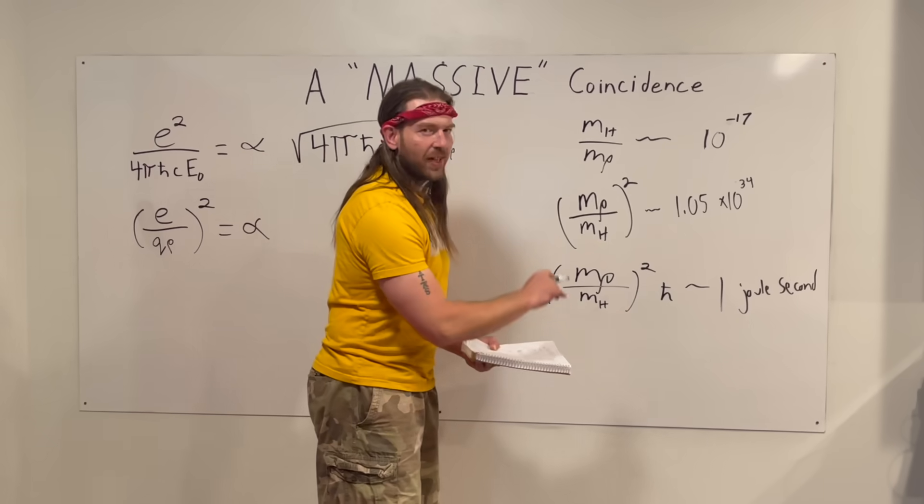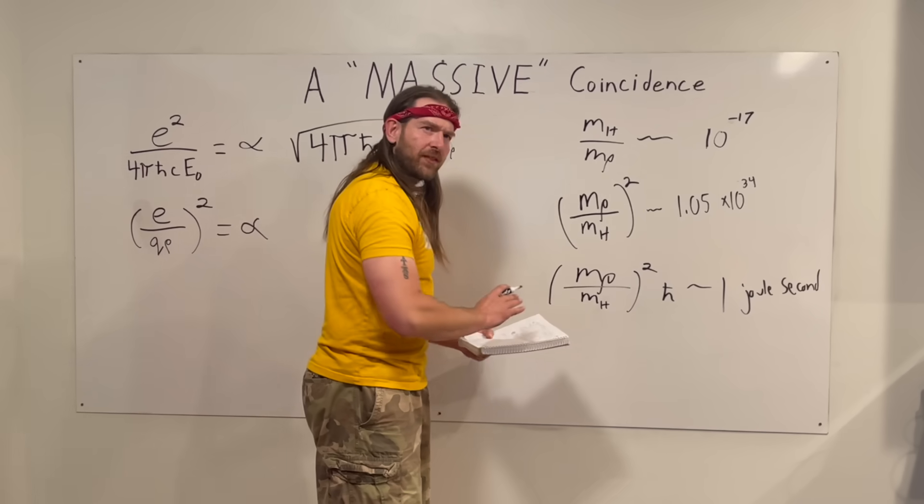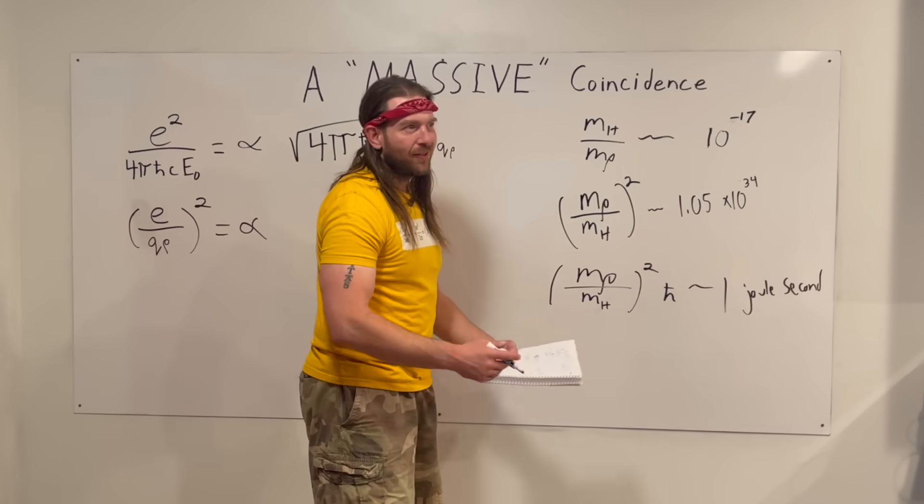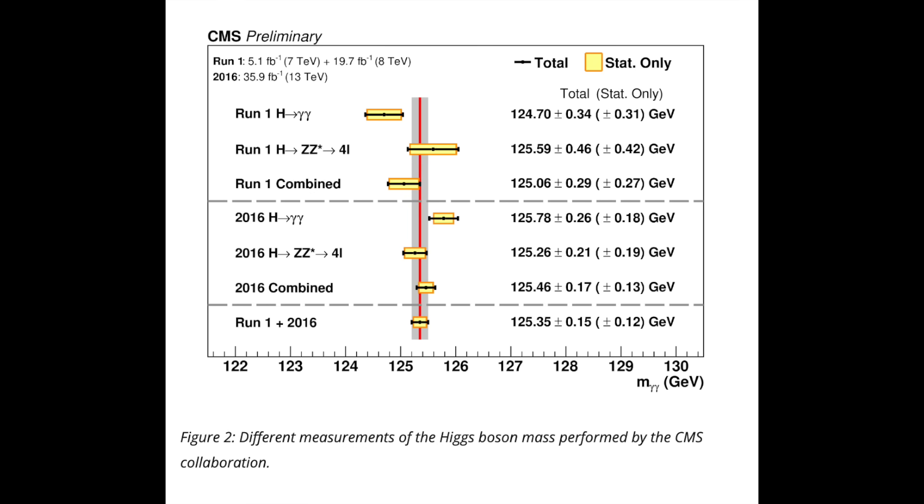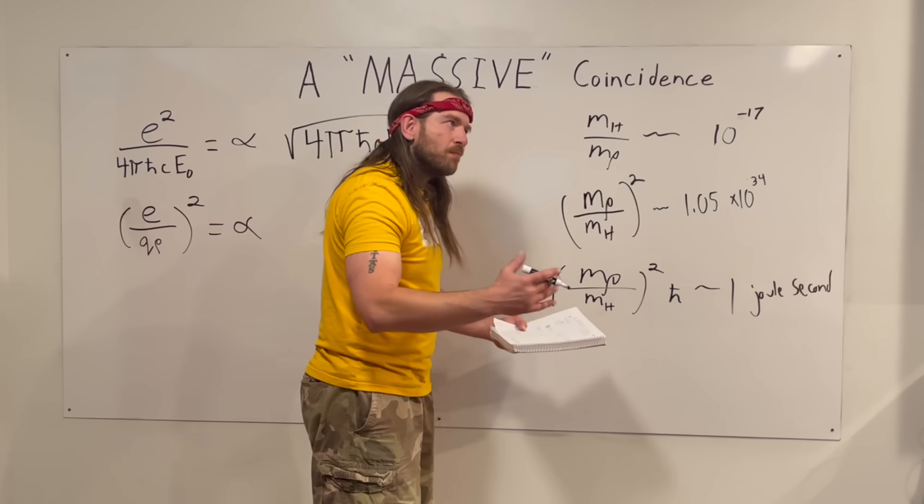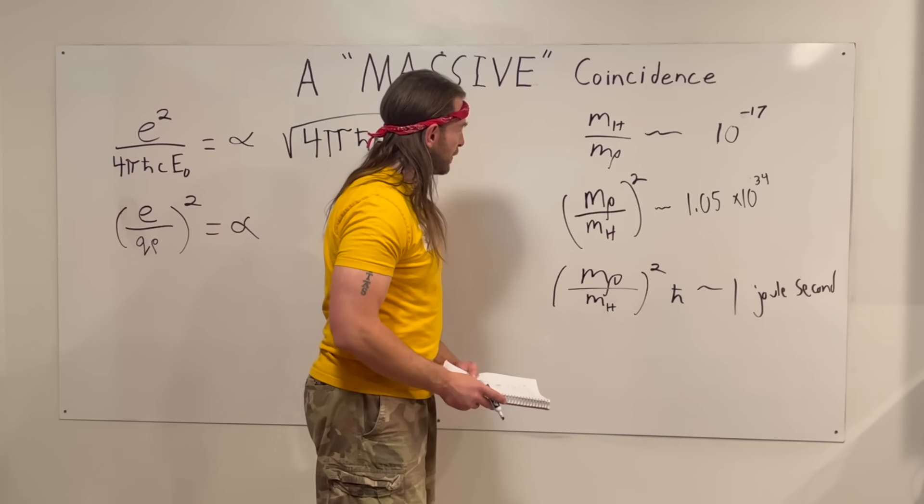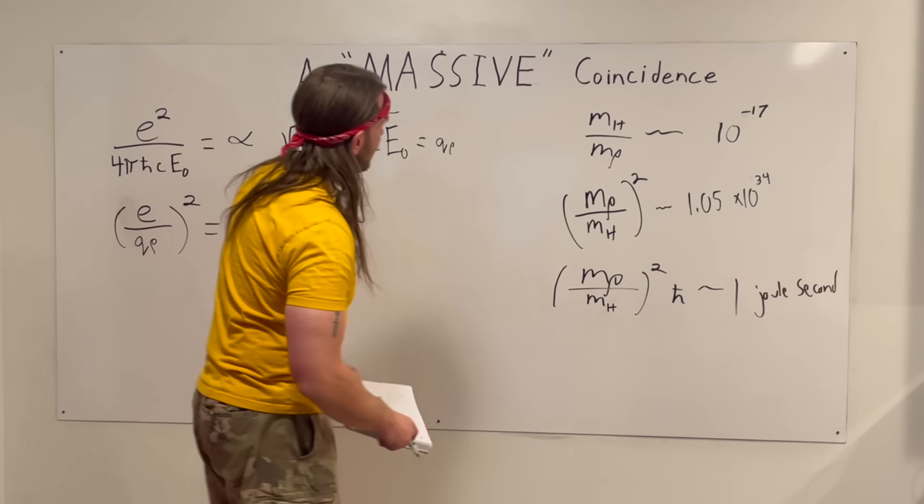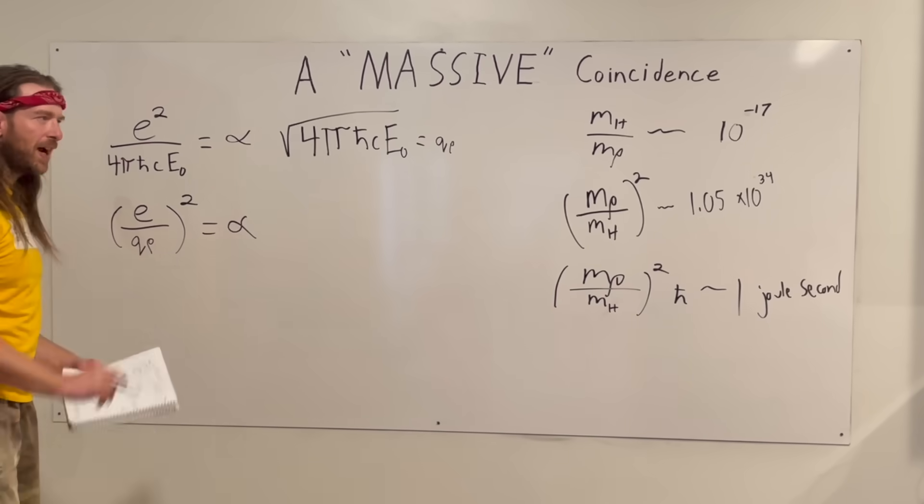However, when you actually look at some of the experimental measurements of the Higgs, we only really have about three significant digits. Right now, most of the measurements are going between approximately 124.5 GeV. There's been some 126.5 GeV. Most of them right now, we have confidence, it's about 125 GeV and then something. Okay, cool. So that got me to thinking that we have this construction, and it's important for the charge boundary.